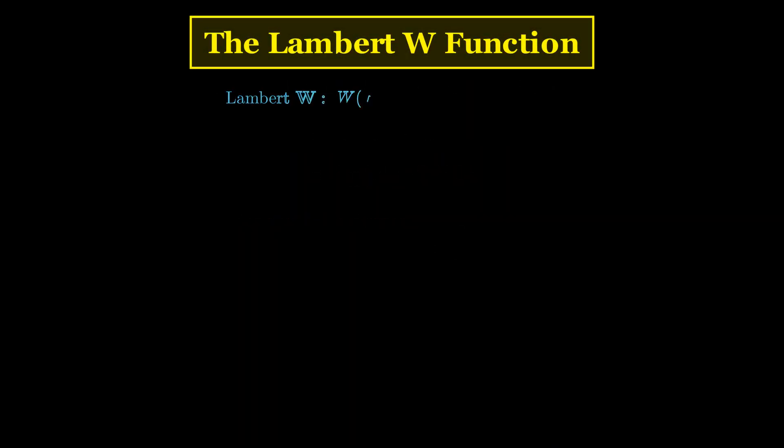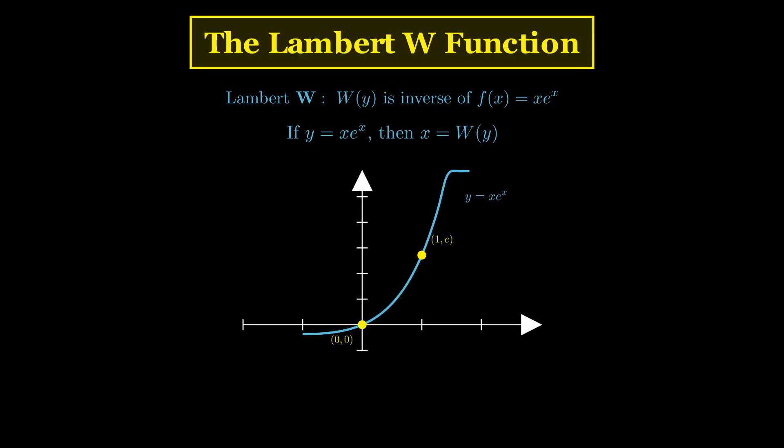This is where the Lambert W function comes in to save the day. The Lambert W function is actually defined as the inverse of the function f of x equals x times e to the x. So if you have y equals x times e to the x, then x equals W of y. Visually, the graph of y equals x times e to the x, the function that the Lambert W function inverts, looks like this.